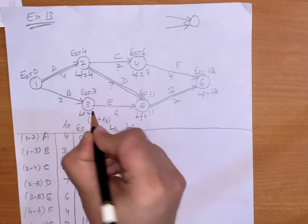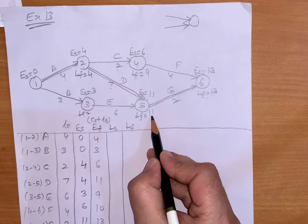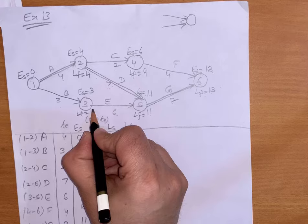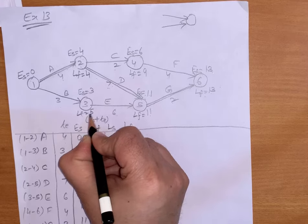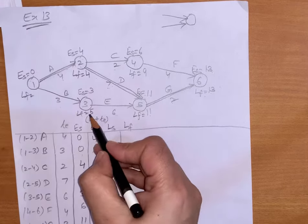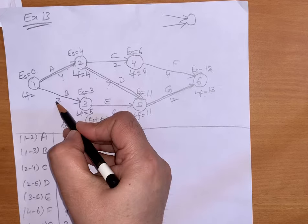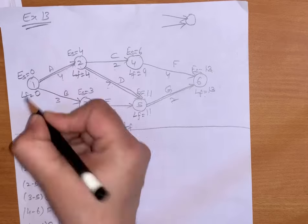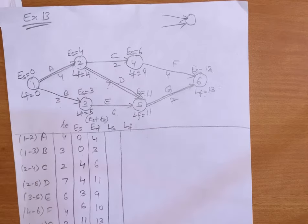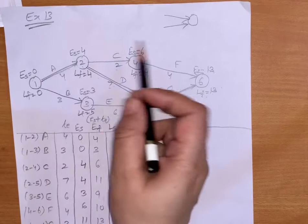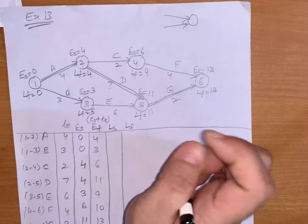LF for event 3 will be 11 minus 6, which is 5. LF for event 1 will be 5 minus 3 equals 2, or 4 minus 4 equals 0 — so we take the lowest one, which is 0. If LF for the first event is 0, it means we have done it correctly.